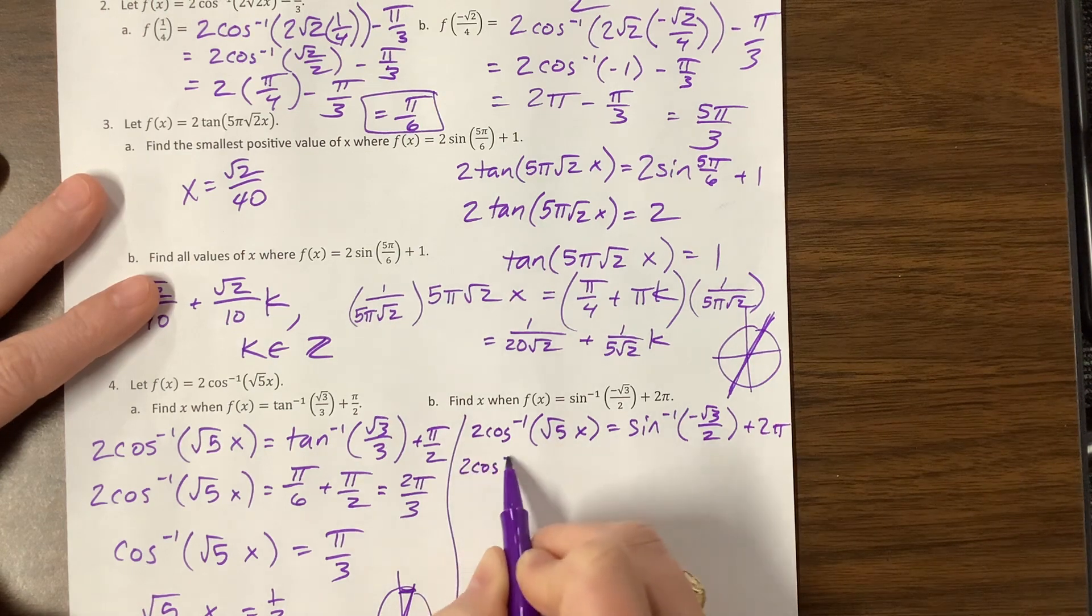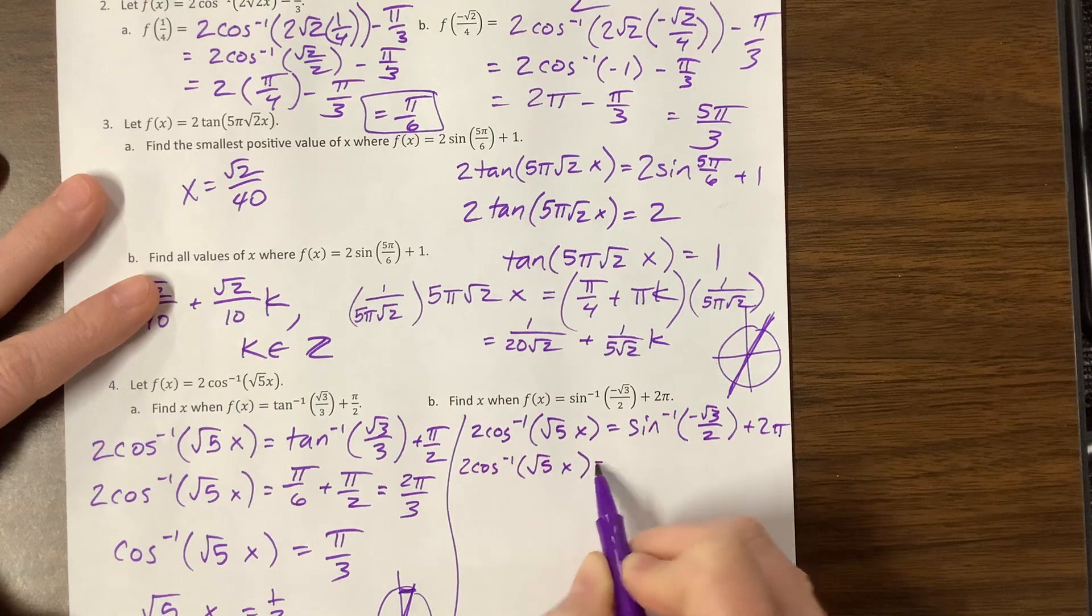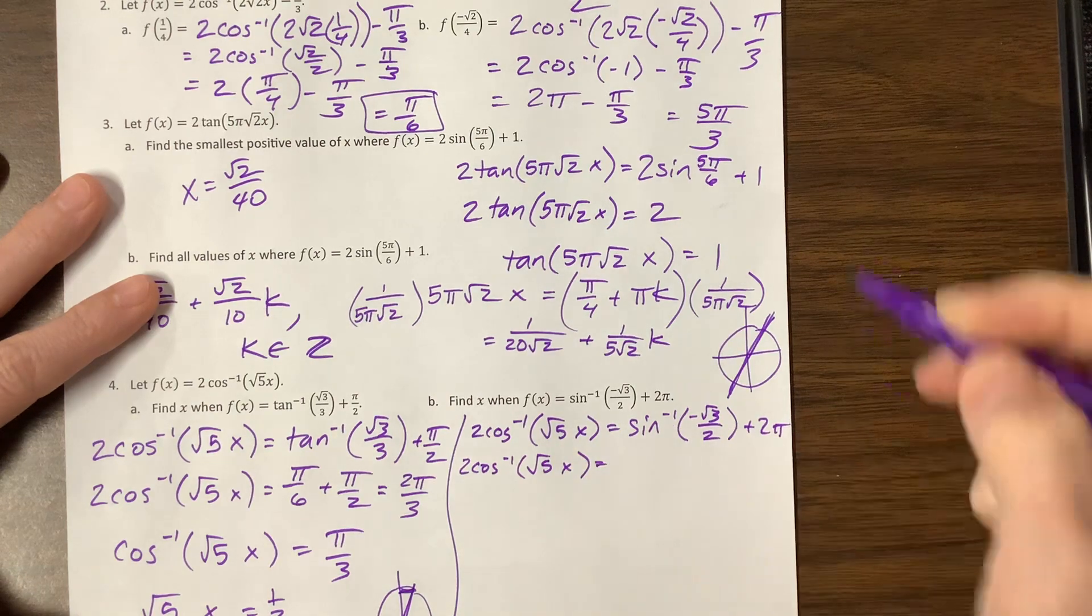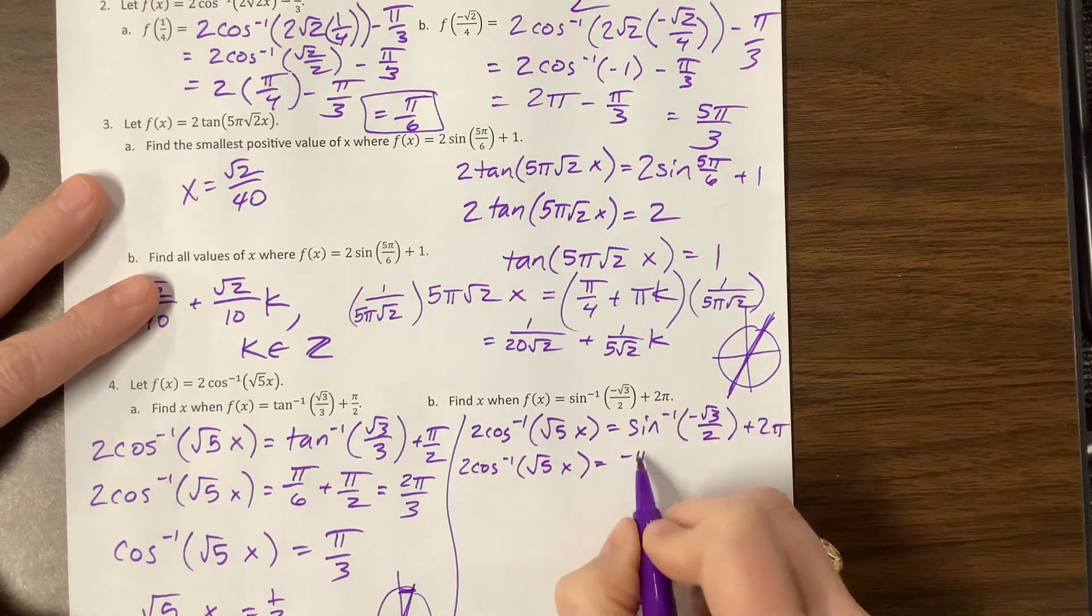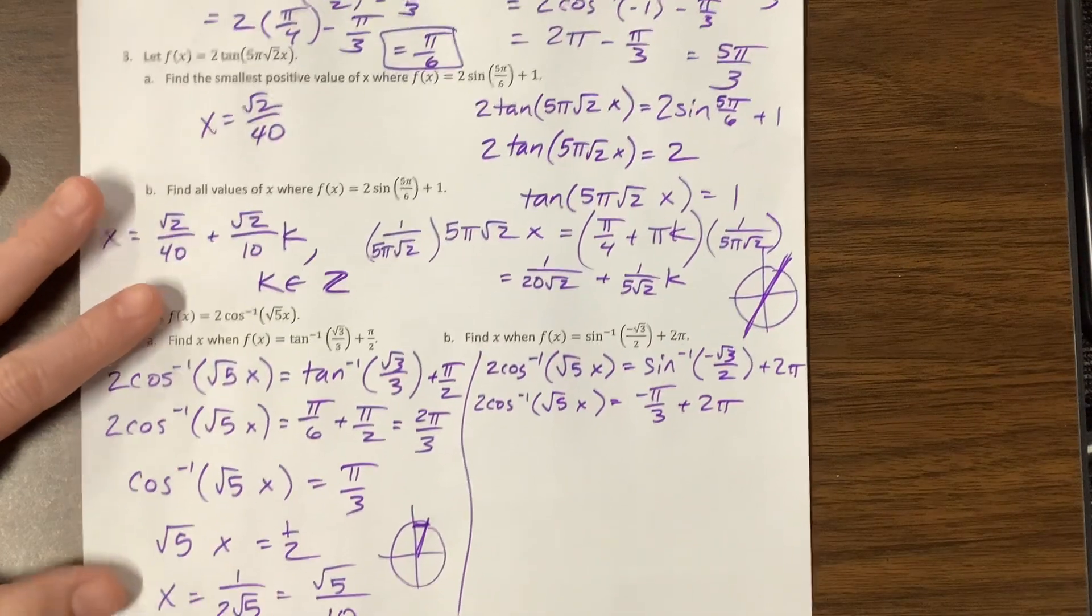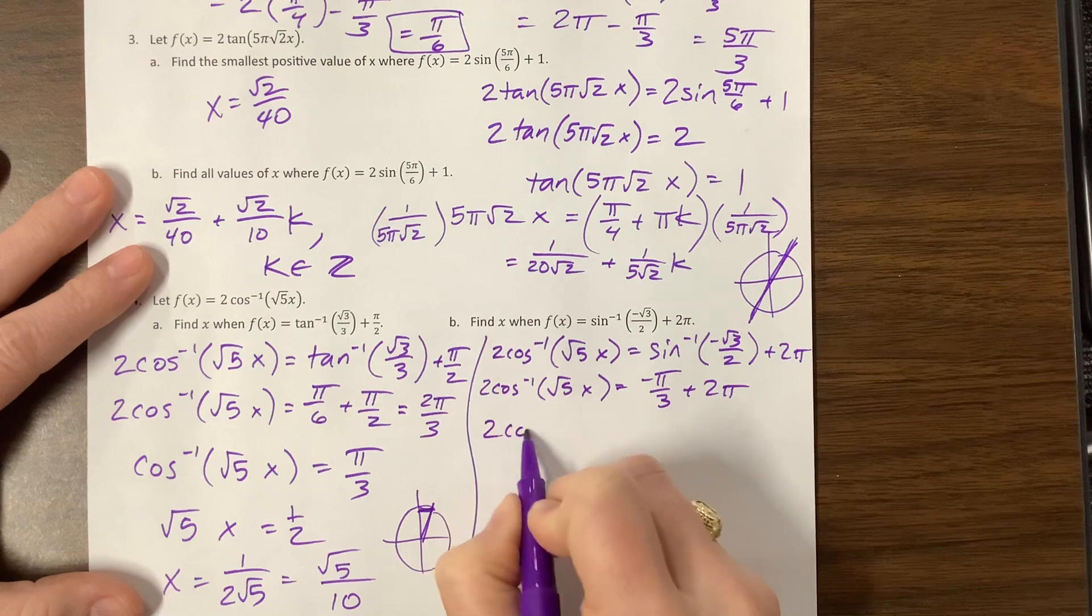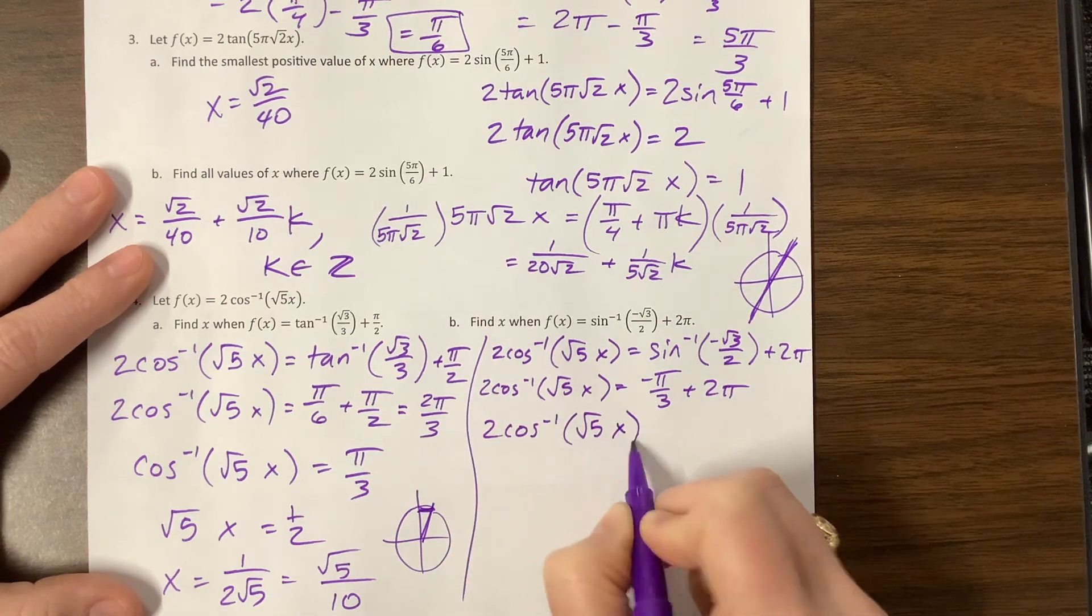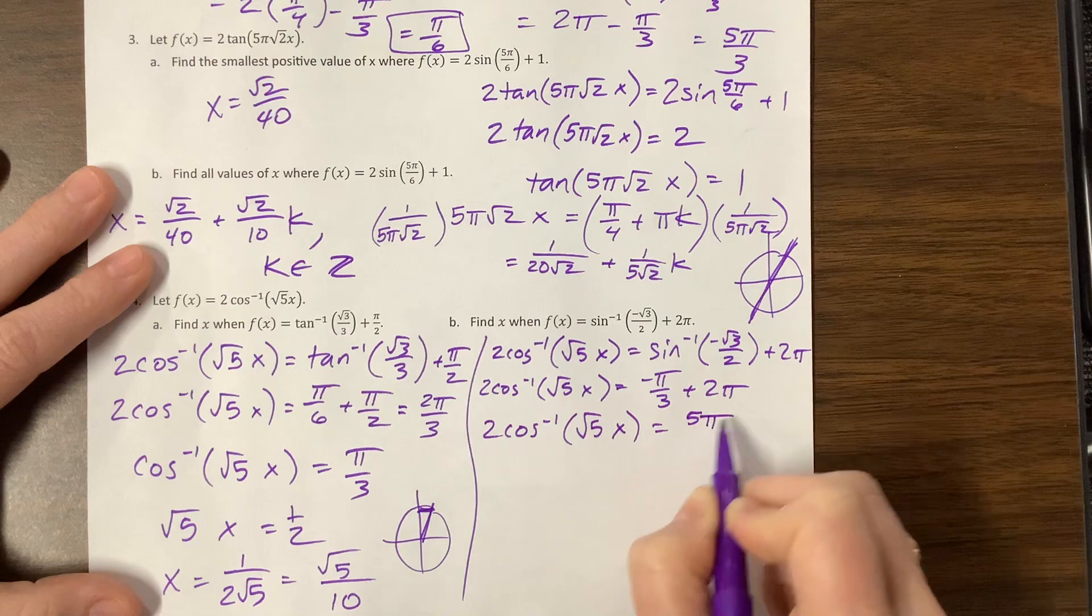Inverse sine of -√3/2 has to be in quadrant 4, and it's getting the negative one. This becomes -π/3 plus 2π.